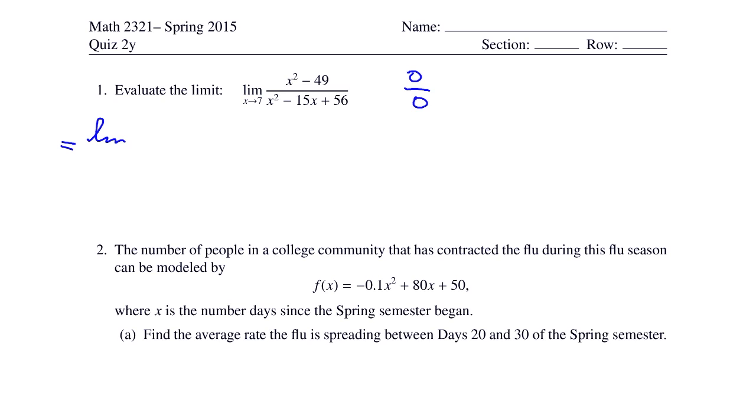So let's write the limit as x goes to 7. Factor the numerator. That factors as x minus 7 times x plus 7. Factor the denominator. That's x minus 7 and x minus 8.